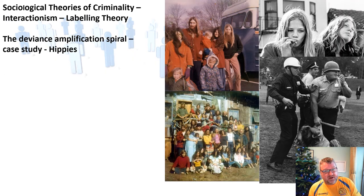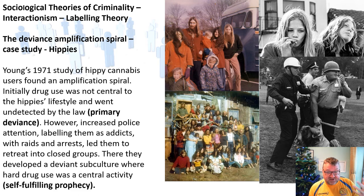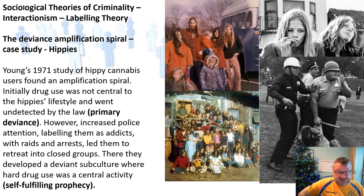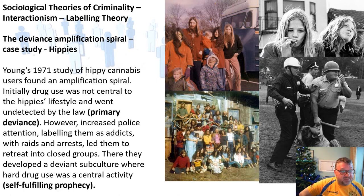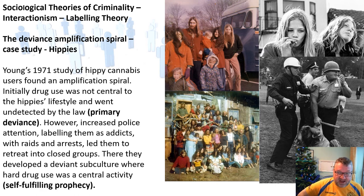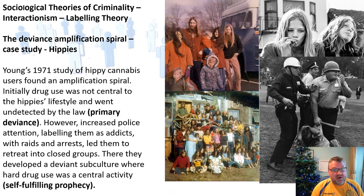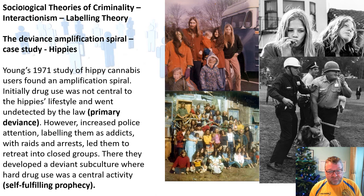Another case study: Jock Young's 1971 study of hippie cannabis users found a similar amplification spiral. Initially, drug use was not central to the hippies' lifestyle and went undetected by law — an example of primary deviance. However, increased police attention labelled them as addicts, leading to raids and arrests, which caused them to retreat into closed groups where they developed a deviant subculture with hard drug use as a central activity. Again, the self-fulfilling prophecy in action.